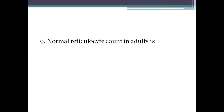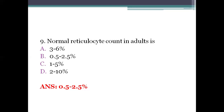Next question: normal reticulocyte count in adults is? Option A: 3 to 6%. Option B: 0.5 to 2.5%. Option C: 1 to 5%. Option D: 2 to 10%. The right answer is option B, 0.5 to 2.5% in adults. In infants, the normal range is 2 to 6%. Reticulocytes are immature RBCs, and 0.5 to 2.5% is the normal count in adults.